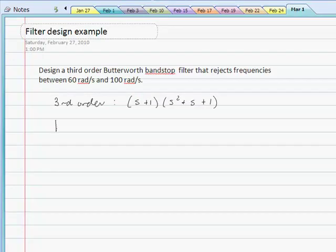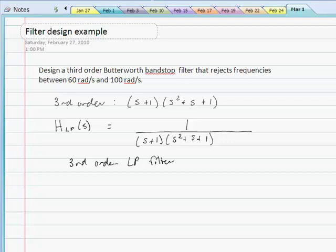So our low-pass filter, let's call this H low-pass of s, is equal to 1 divided by that Butterworth polynomial. So this is a third-order low-pass filter with omega c equal to 1 radian per second.